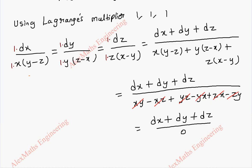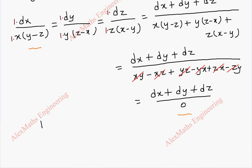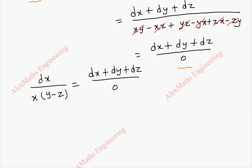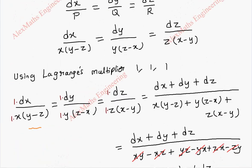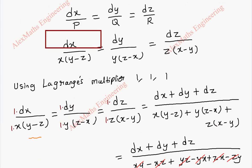Now let's take any two terms — I am taking the first and last. The first term is dx / x(y−z), which equals (dx + dy + dz) / 0. By cross multiplication this entire term is multiplied by 0, so we arrive at dx + dy + dz equal to 0. On integration we get x + y + z equal to C1.